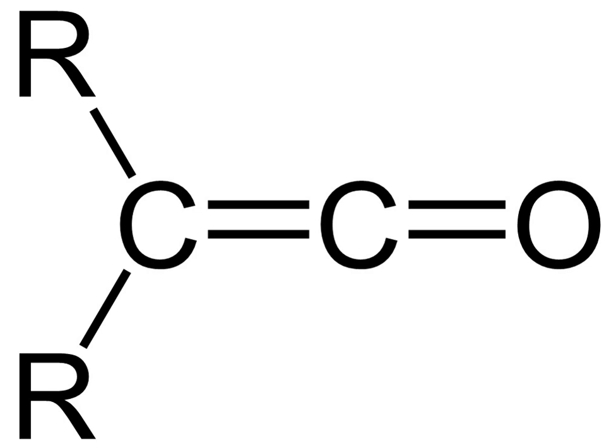CH3-CO-CH3 → CH2=C=O + CH4. This reaction is called the Schmidlin Ketene Synthesis.